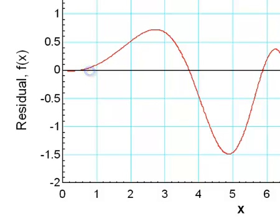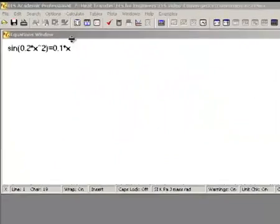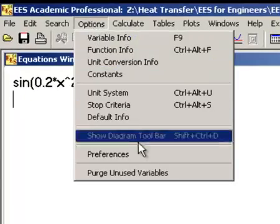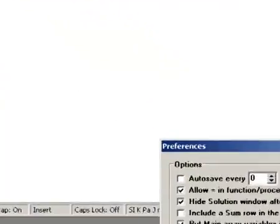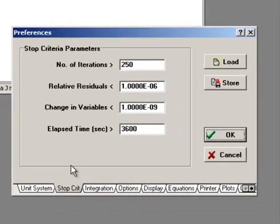Some type of criteria is necessary in order to stop the iteration process. In Ease, the stop criteria is specified in the Stop Crit tab of the Preferences dialog, which is accessed from the Options menu. The criterion could be the number of iterations,